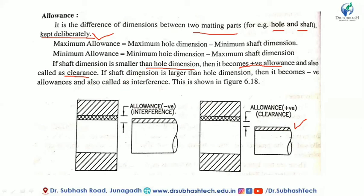When the shaft dimension is larger than the hole dimension, it becomes negative allowance, which is called interference.